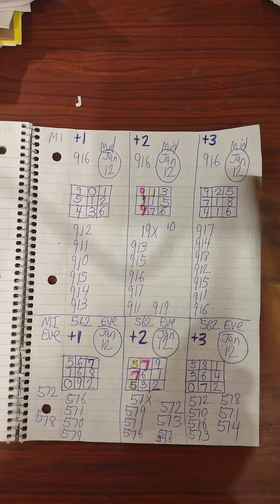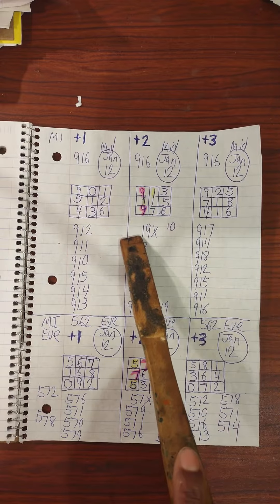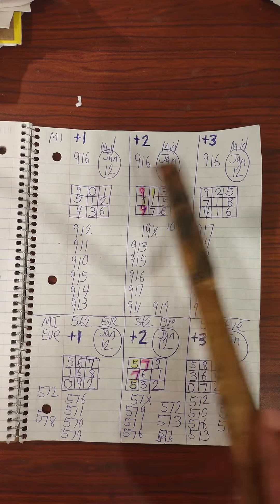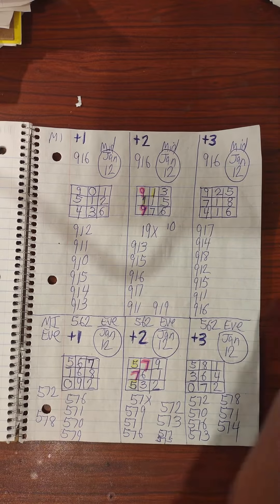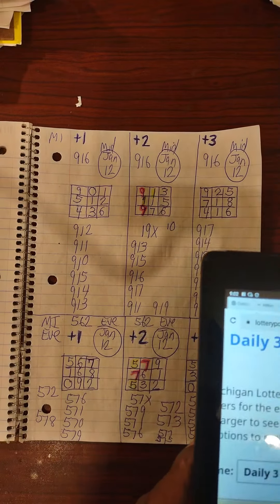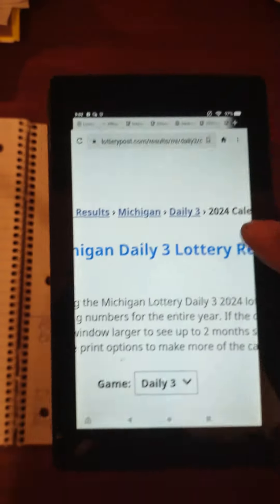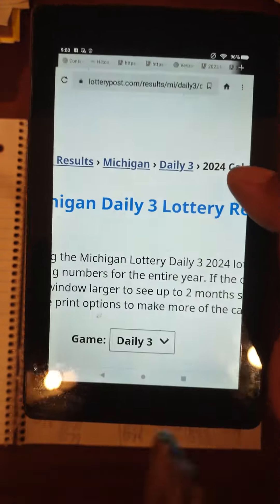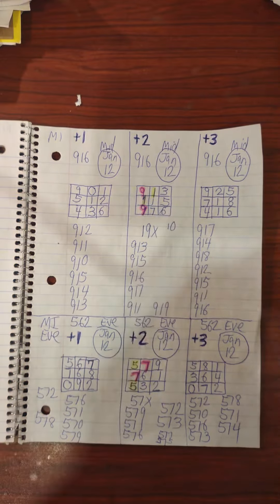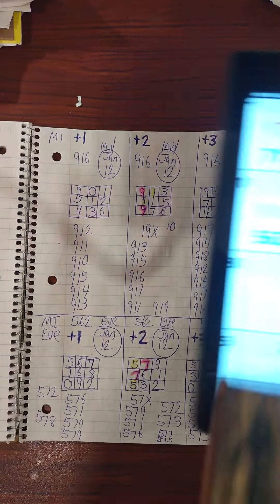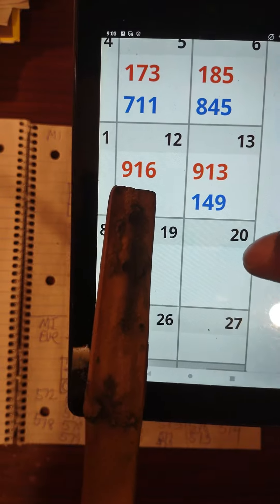So when I did the work I was looking for a 1-9 pair. This is for Michigan. And I shared this pattern on my live. This is Michigan. This is the 12th, 9-1-6.